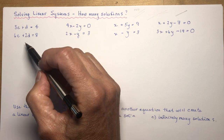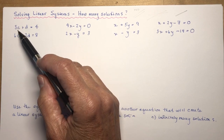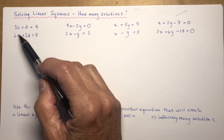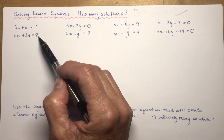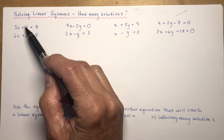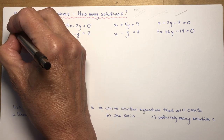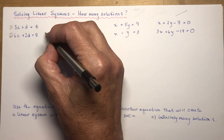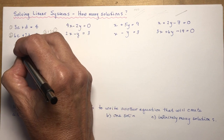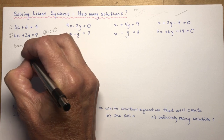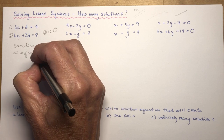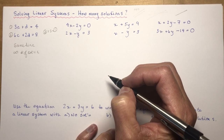Looking at this equation: 3c + 1d = 4 and 6c + 2d = 8. By quick inspection, this second equation is simply two times the first one. 3 times 2 is 6, 1 times 2 is 2, and 4 times 2 is 8. So equation 2 is 2 times equation 1, which means they are actually the same line - there will be an infinite number of solutions.